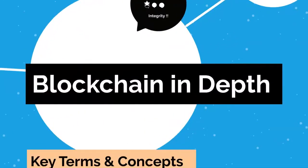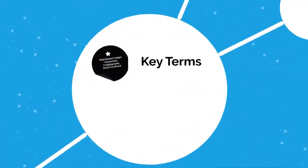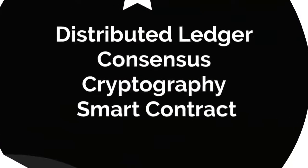Having seen the transactions and the integrity of the data — which is one of the key strengths of blockchain — now in this video we will be focusing on key terms which can be confusing. After watching this video, I am confident these terms will no longer confuse you. The key terms are distributed ledger, consensus, cryptography, and smart contract.